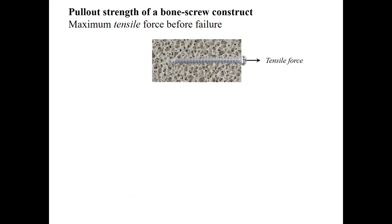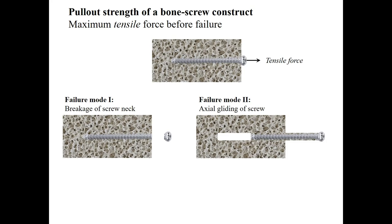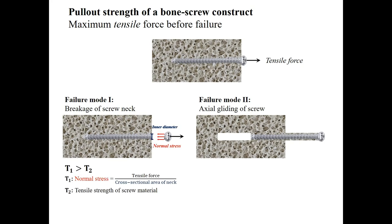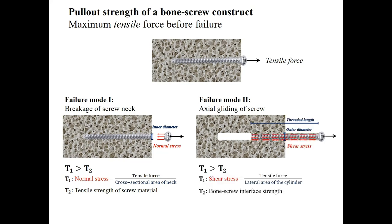Pull-out strength of a bone screw construct is defined as the maximum tensile force the structure could tolerate before failure. The common modes of failure of a screw subjected to tensile force are neck breakage and gliding alongside the axial axis. In the first mode, the normal stress within the neck becomes greater than the tensile strength of the material used in the screw. The neck has the least diameter inside the screw body, and therefore the normal stress at this location is greater than at any other portion. In the second mode, the shear stress on the lateral threaded side exceeds the bone-screw interface strength.